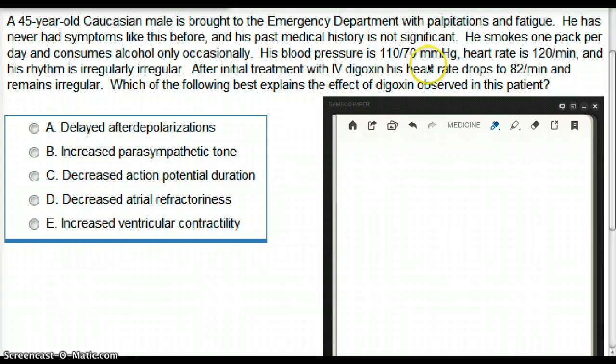His blood pressure is 110 over 70, heart rate is 120, and his rhythm is irregularly irregular. After initial treatment with IV digoxin, his heart rate drops to 82 per minute and remains irregular. So after we gave him digoxin, his heart rate dropped to 82 from 120, but the rhythm remained irregular. Now which of the following best explains the effect of digoxin observed in this patient?